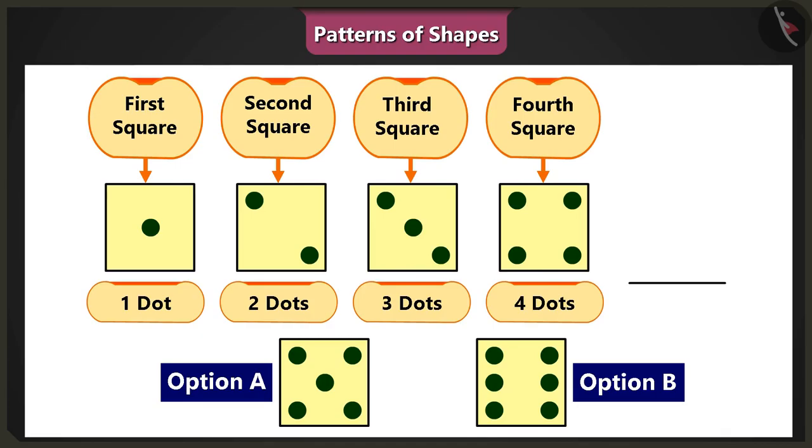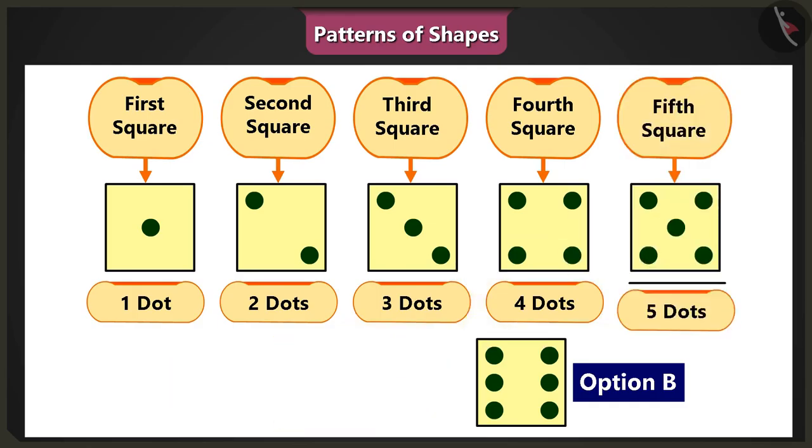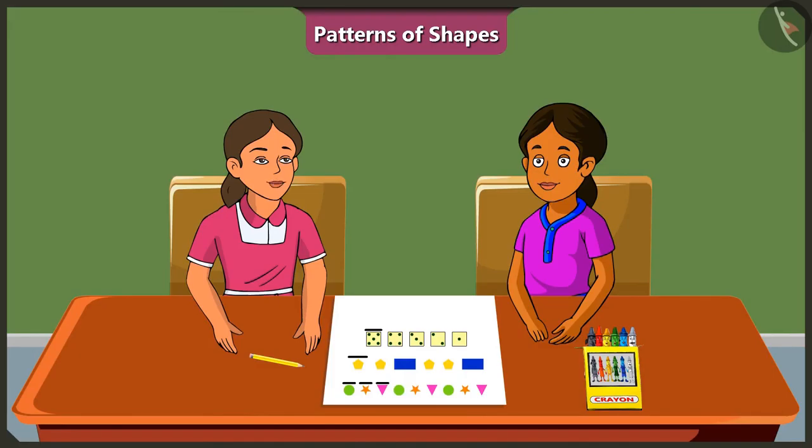So, according to this pattern, the fifth square will have five dots in it, right? Yes, but the pattern may not always be in ascending order.